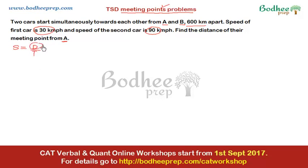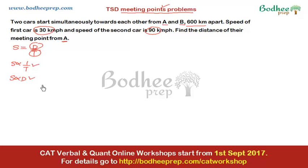Whenever the distance is constant, speed is inversely proportional to time, and whenever the time is constant, speed is directly proportional to distance. These are the two core logics, along with relative speed, that we use to solve these kinds of questions. This first question is pretty easy and can be approached two ways — one is relative speed.